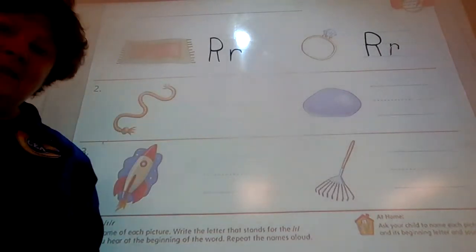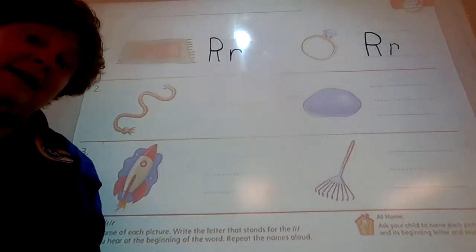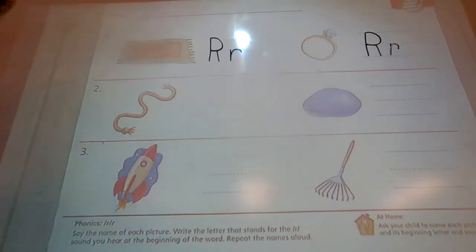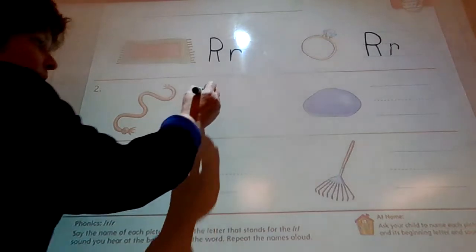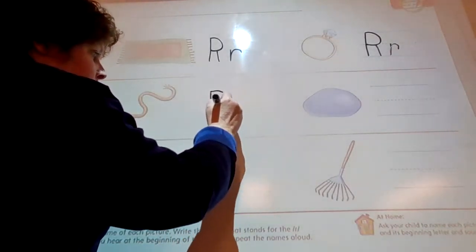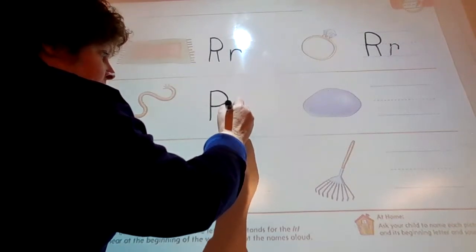Okay, number two. What is this picture? That is a picture of a what? Yes, a rope. So once again, make your capital R and your lowercase r.